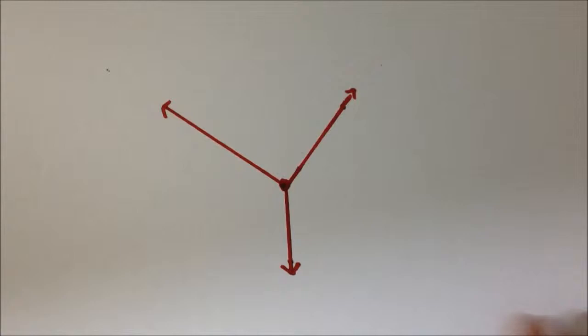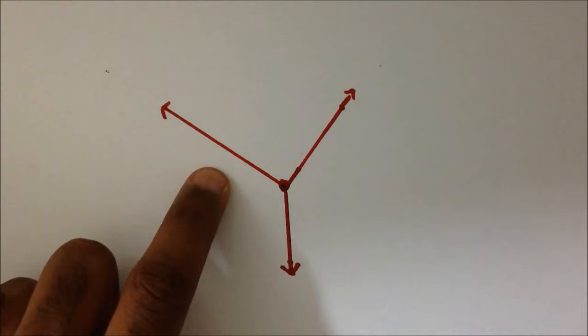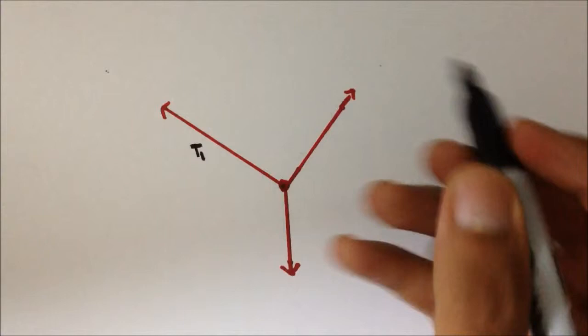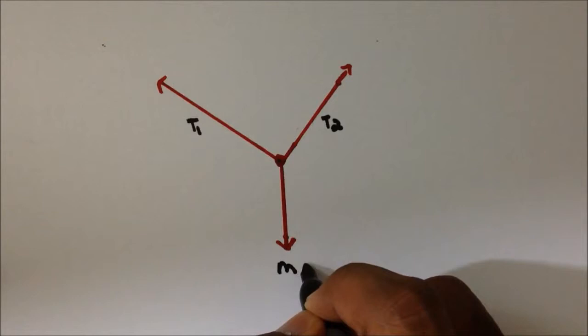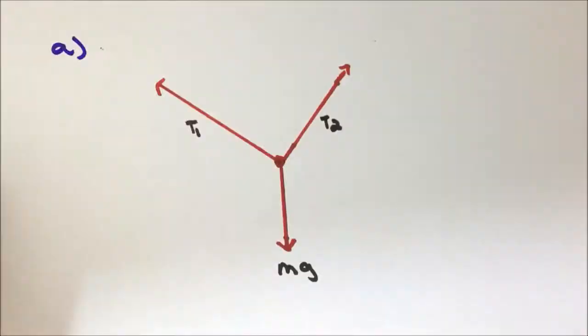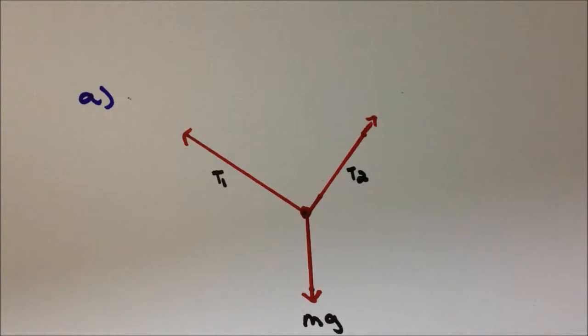This tension and this tension are different because the angles are different. I will label this one tension T1, and this one tension T2. This will be the weight, mg. This will be your answer to part A. A free body diagram is really just a representation of all the force vectors acting on a body or a particle. We have achieved that, so let's move on with part B.